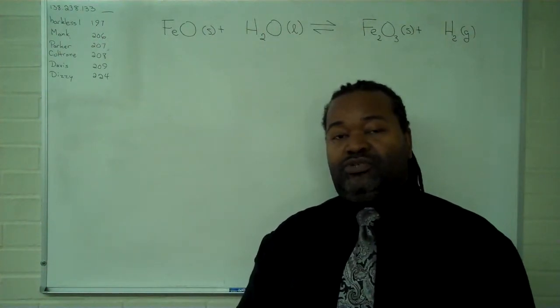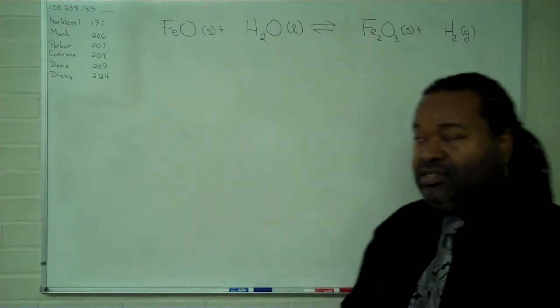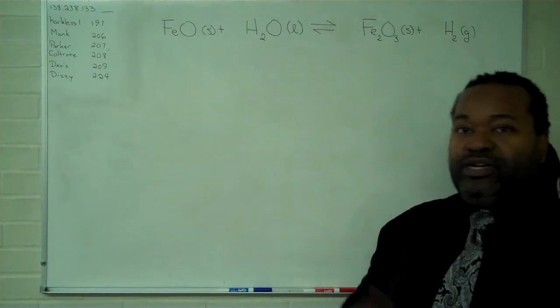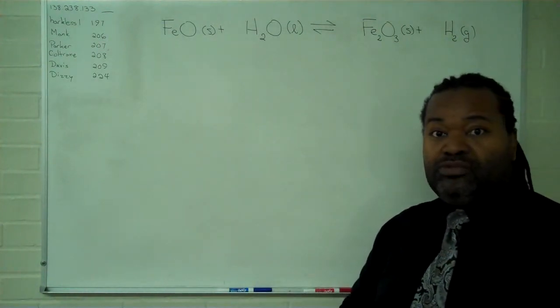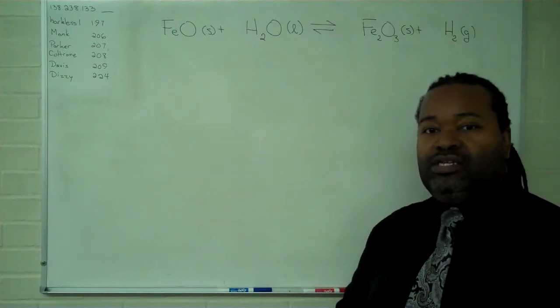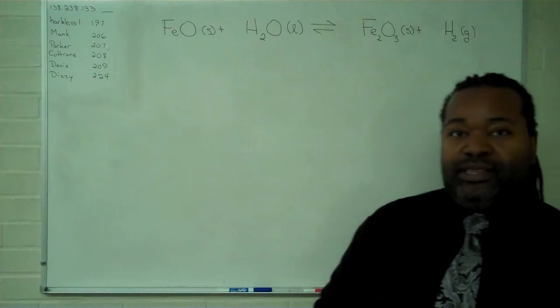The second step is to write out the equilibrium constant expression using products over reactants, raising the individual concentrations to their stoichiometric coefficients. The final step is to remove the things that do not count in the equilibrium constant expression, namely solids and pure liquids.